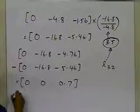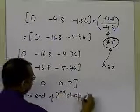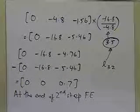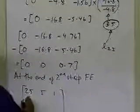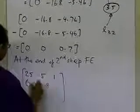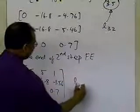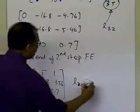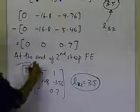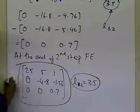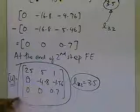At the end of the second (and last) step of forward elimination — we always conduct n minus 1 steps — the matrix is: first row [25, 5, 1], second row [0, −4.8, −1.56], third row [0, 0, 0.7], and L32 = 3.5. This upper triangular matrix is in fact your U matrix in the LU decomposition.